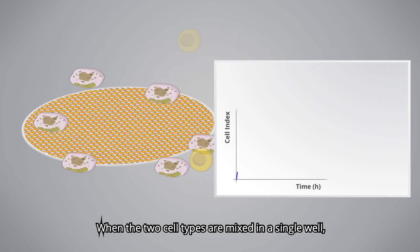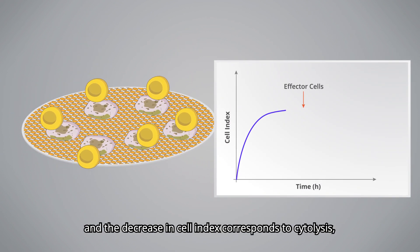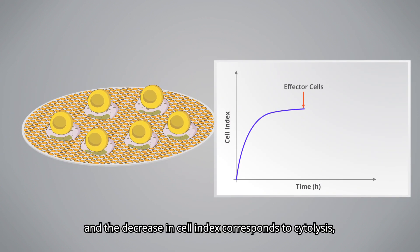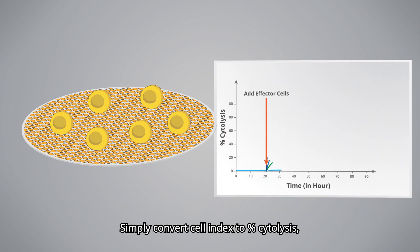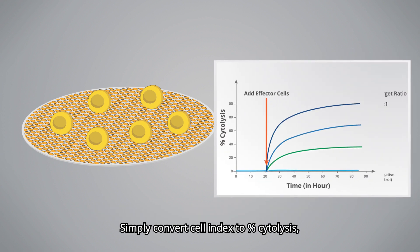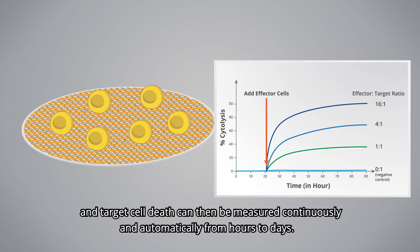When the two cell types are mixed in a single well, the decrease in cell index corresponds to cytolysis, and we can be confident that the majority of that decrease is coming from the adherent tumor cells. Simply convert cell index to percent cytolysis, and target cell death can then be measured continuously and automatically from hours to days.